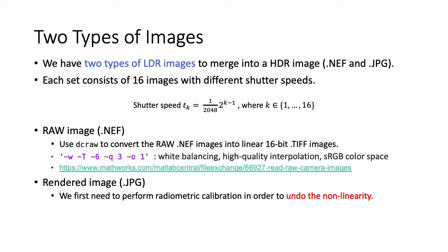We have two types of LDR images: NEF and JPG. Each set consists of 16 images with different shutter speeds. With large shutter speed, more light photons come into camera and the captured image becomes brighter. In the case of RAW-NEF images, we use DC RAW function to convert them into linear 16-bit TIFF images. This is the setting for white balancing and high-quality interpolation and sRGB color space. Unlike the RAW images, the LDR-JPG images are non-linear, so we first need to perform radiometric calibration in order to undo this non-linearity.